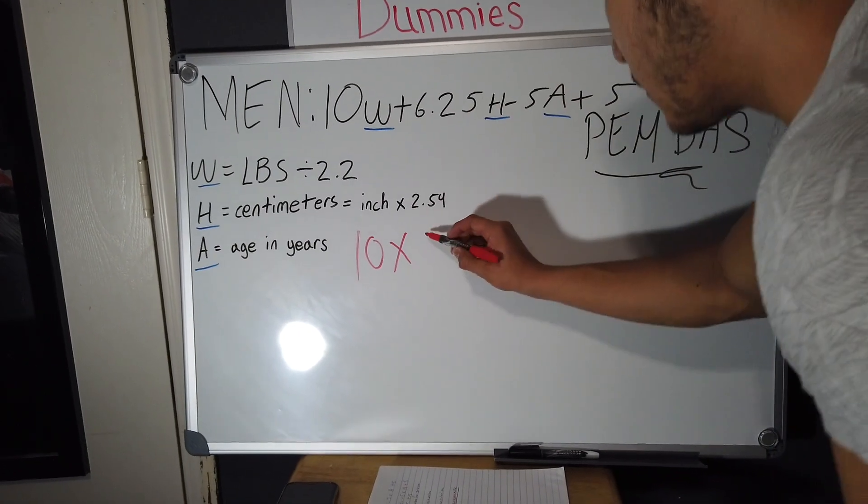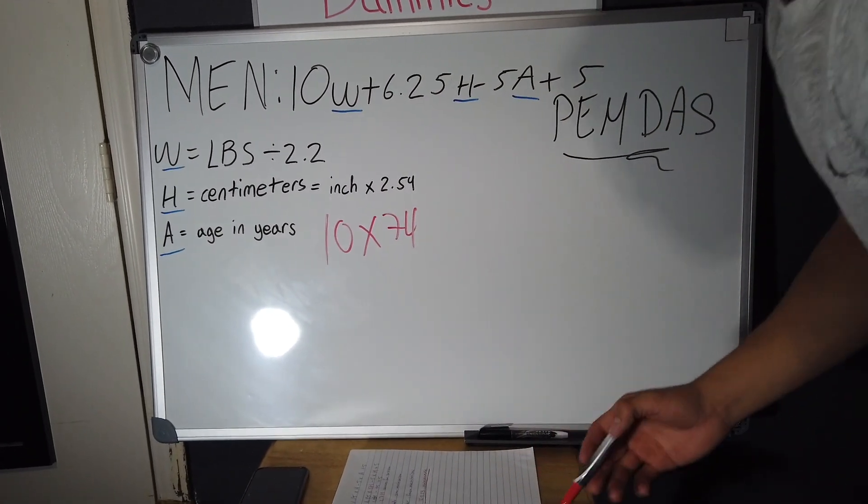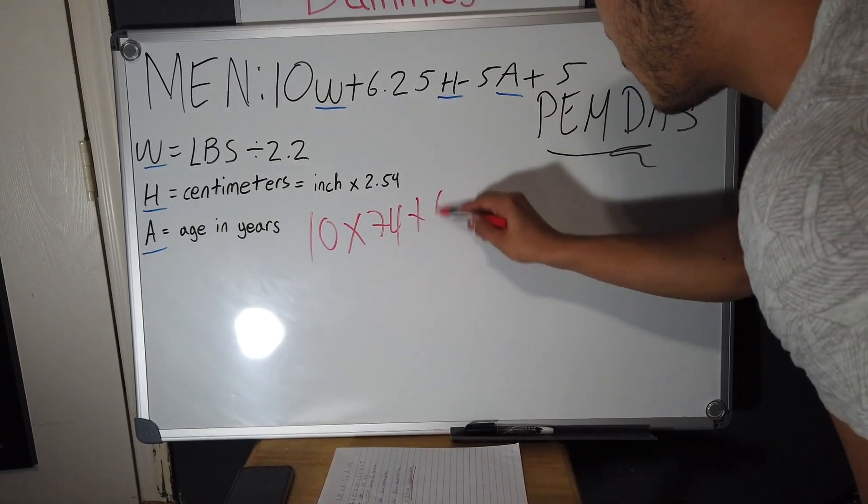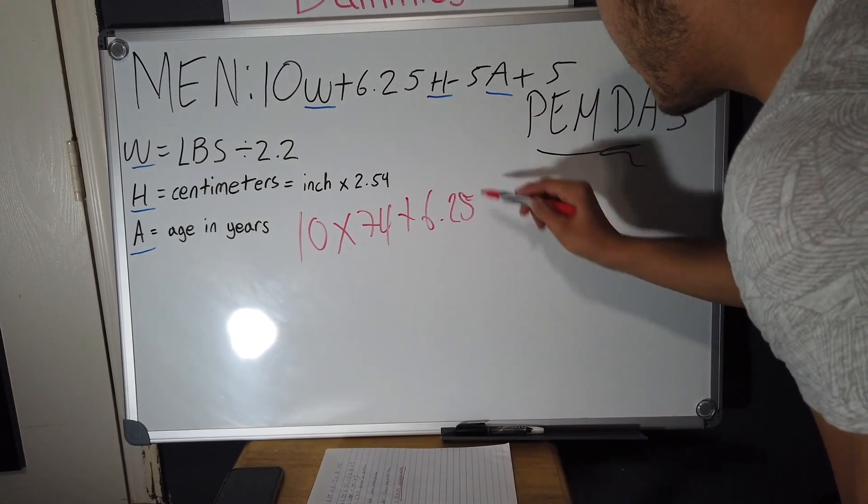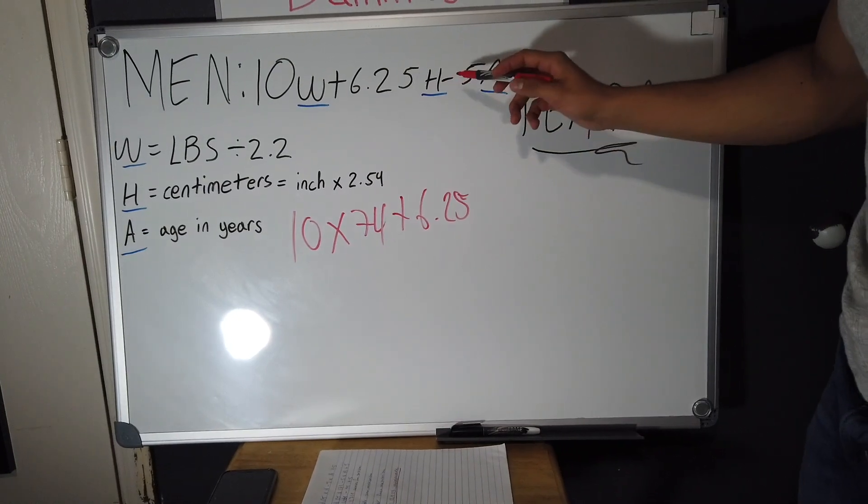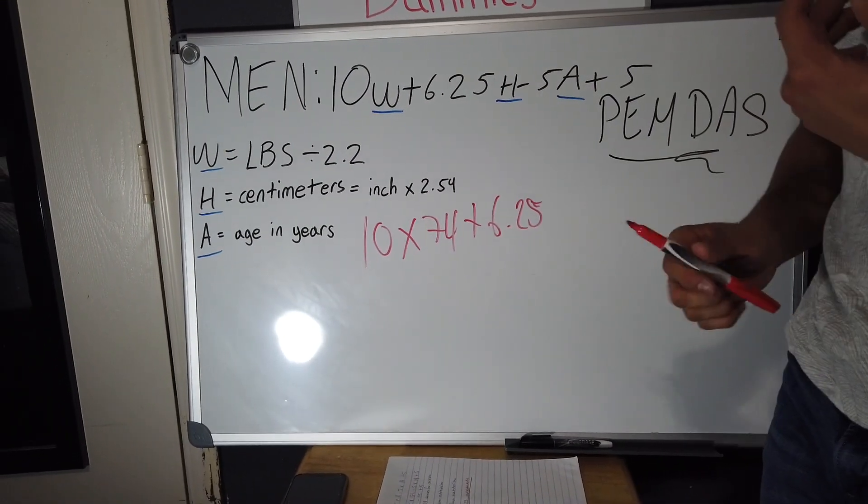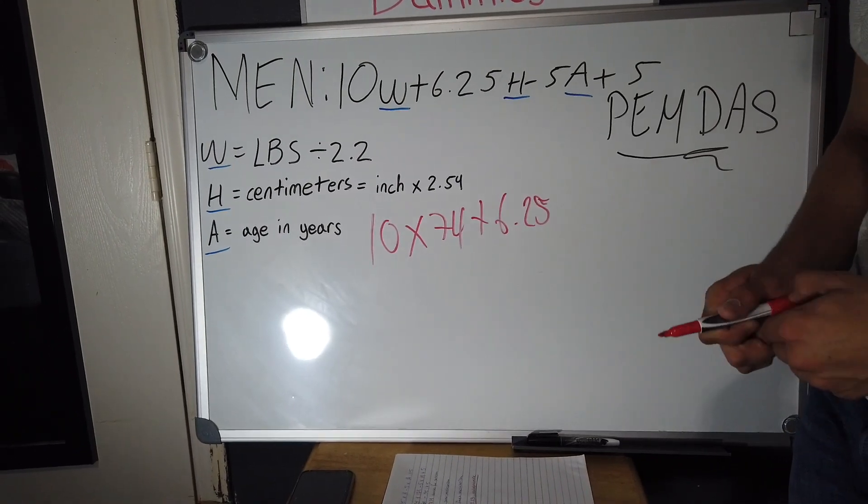So then I would put 74 and then you just bring down the equation, so it would be plus 6.25. And then you want to convert your height into centimeters and I'm 5'7" and a half.